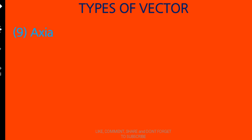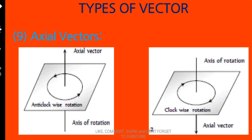The axis of rotation is in general always perpendicular to the plane. There are two types of rotation: anticlockwise and clockwise. For anticlockwise rotation, the axial vector points upward; for clockwise rotation, the axis of rotation points downward. This is clearly shown in the diagram.